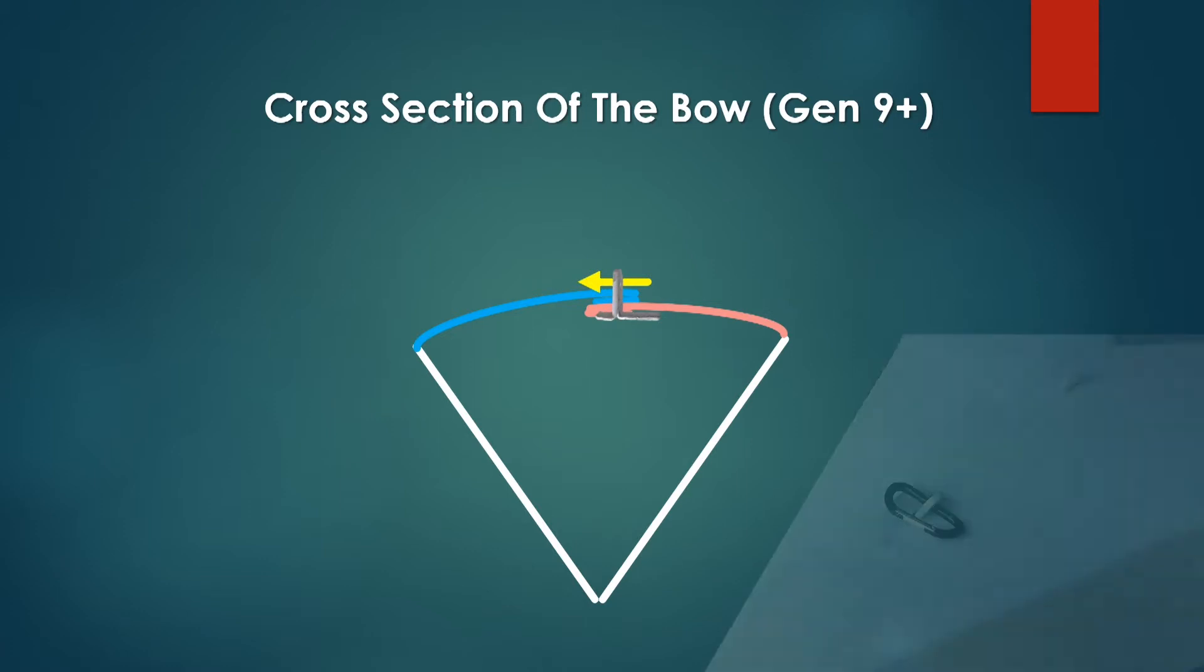If I don't want to use the T bracket, I can cut two slots and then use lashing to hold the top together.